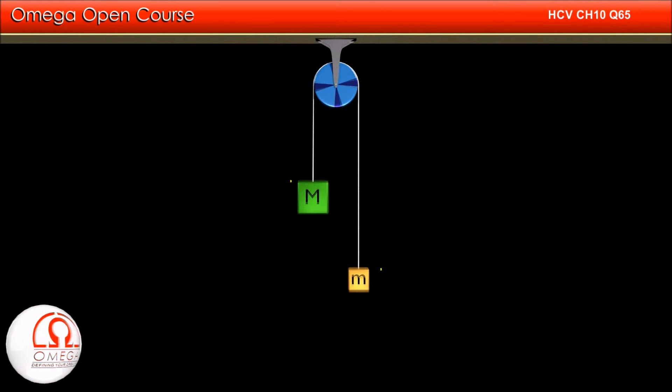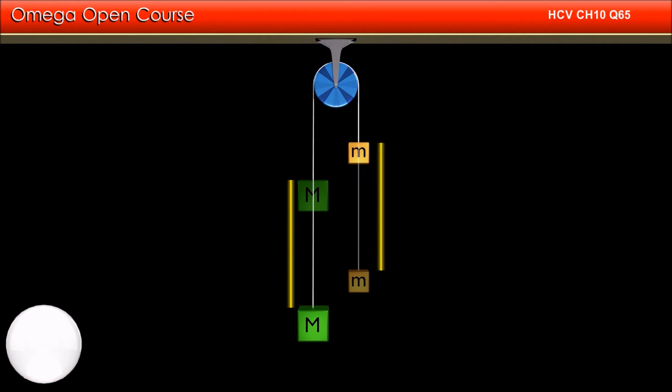As you can see, when the 400 gram block descends by 50 cm, the 200 gram block moves up by 50 cm. So, the gravitational potential energy of the 400 gram block decreases while that of the 200 gram block increases.